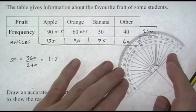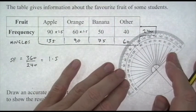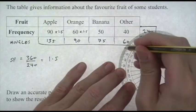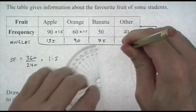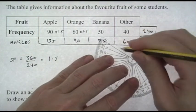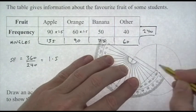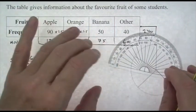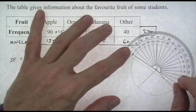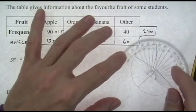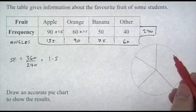And then for bananas it's going to be 75 degrees. That should leave us 60 degrees for the other, which we can quickly check. Then all you have to do is fill in the fruit names with their frequencies.